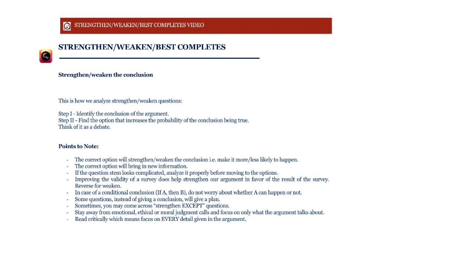If you need to strengthen the argument, imagine you are on Adam's side. It's your turn to speak and add information to support Adam. You pick this new information from the five options — it cannot be a repetition of what he has already said. It must be new information to support his opinion. That is why we separate out the conclusion and strengthen that. We cannot strengthen the premises, since the premises are taken to be true.